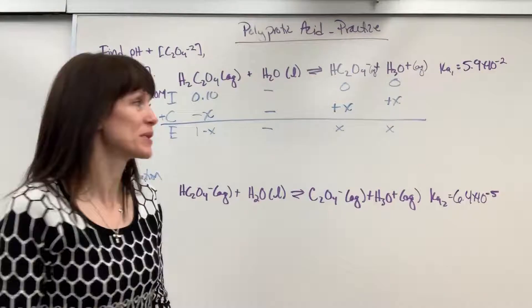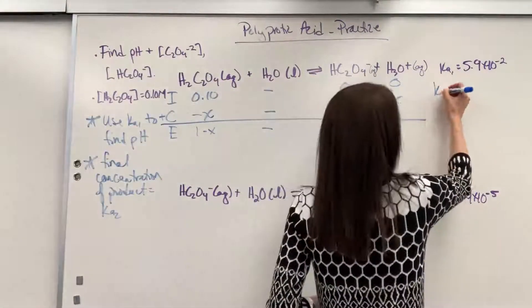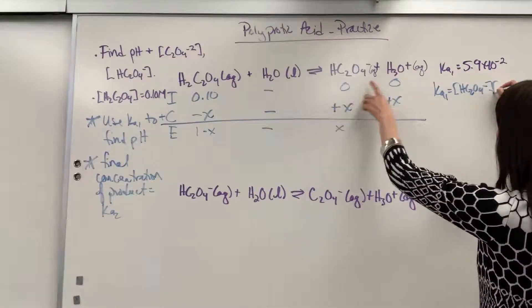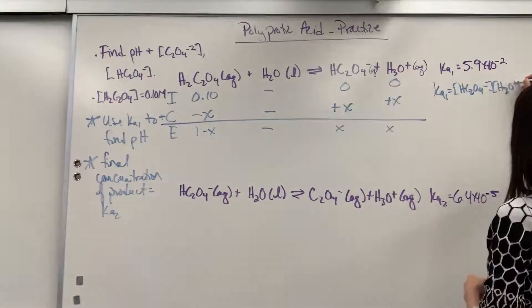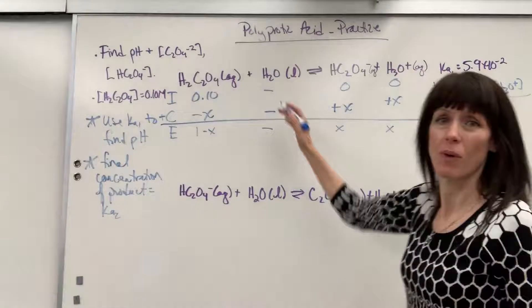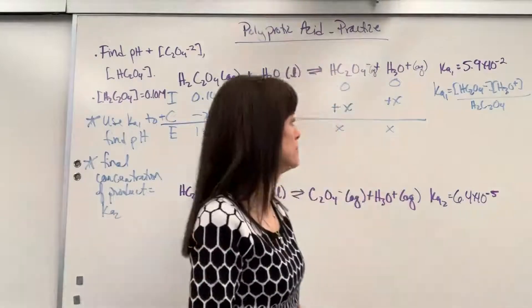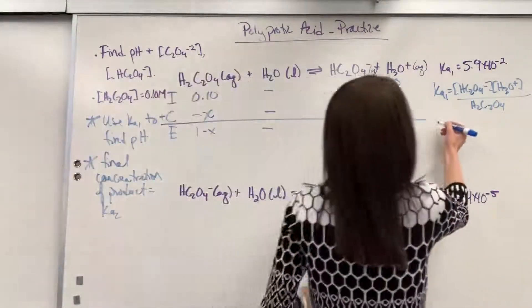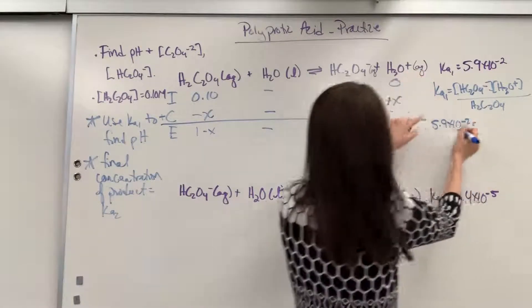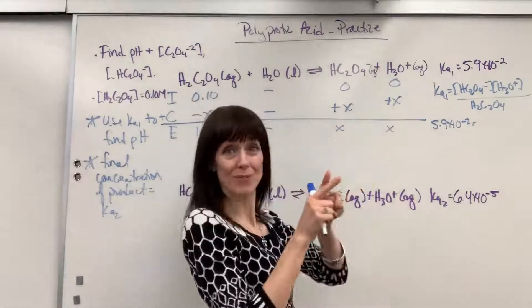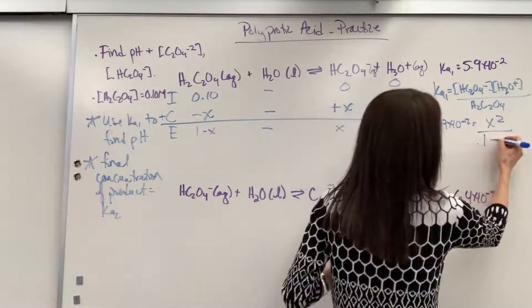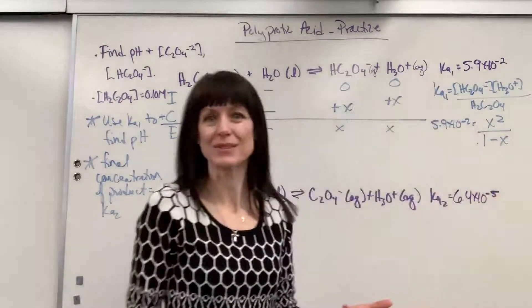Now let's write the equilibrium expression. Ka1 equals products — that's hydrogen oxalate times hydronium — divided by the reactant, which was the oxalic acid. Water is not included. Plugging in numbers: 5.9 times 10 to the minus 2 equals X squared divided by 0.1 minus X.